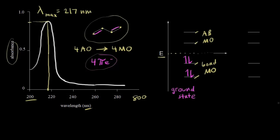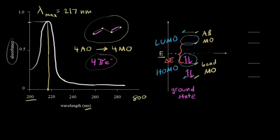Next, we shine light on butadiene, and the molecule absorbs energy from the light. There is a difference in energy between the orbitals — in particular between these two specific orbitals. The lower occupied orbital is the highest occupied molecular orbital, or HOMO. The unoccupied antibonding molecular orbital just above it is the lowest unoccupied molecular orbital, or LUMO. The energy difference between the HOMO and the LUMO is what we're thinking about when a molecule absorbs energy.